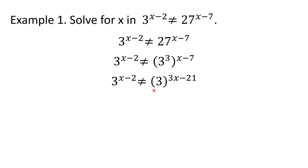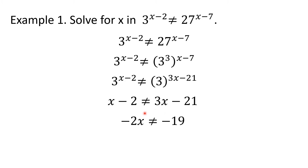So this time we may now equate their exponents: x minus 2 is not equal to 3x minus 21. By the addition property of inequality, we add negative 3x and positive 2 to both sides to combine like terms, giving us negative 2x is not equal to negative 19. Then applying the multiplication property of inequality, we divide both sides by negative 2, and we arrive at x is not equal to 19 over 2. So x may take any real number aside from 19 over 2.